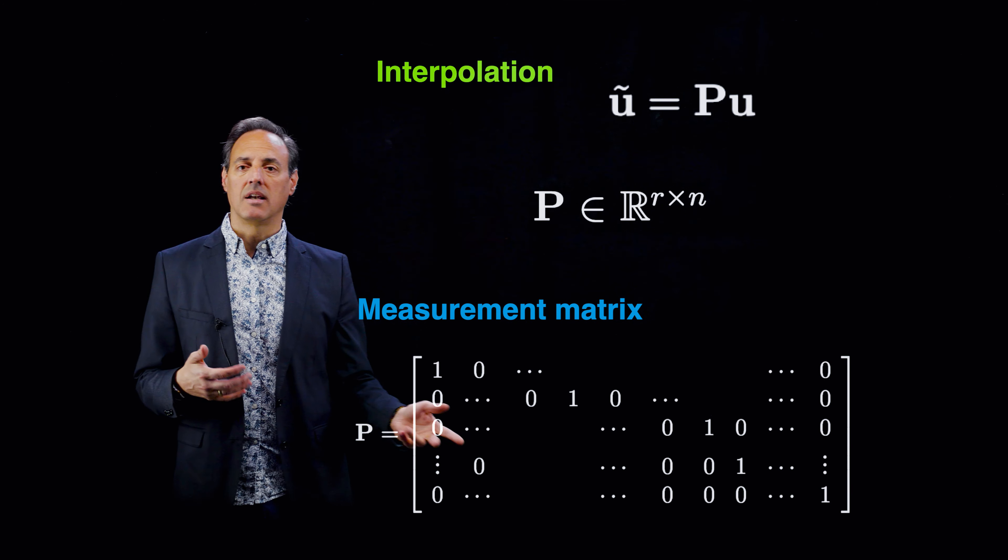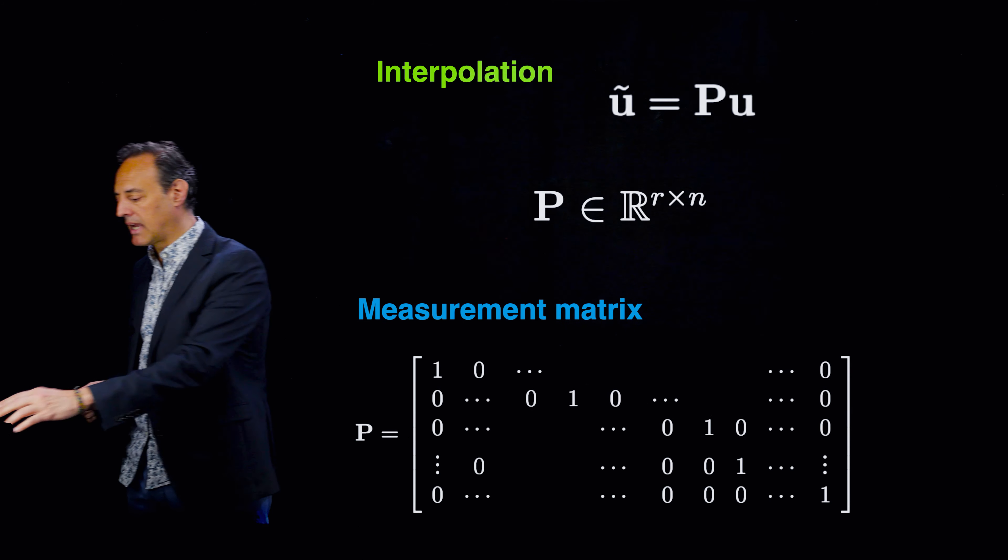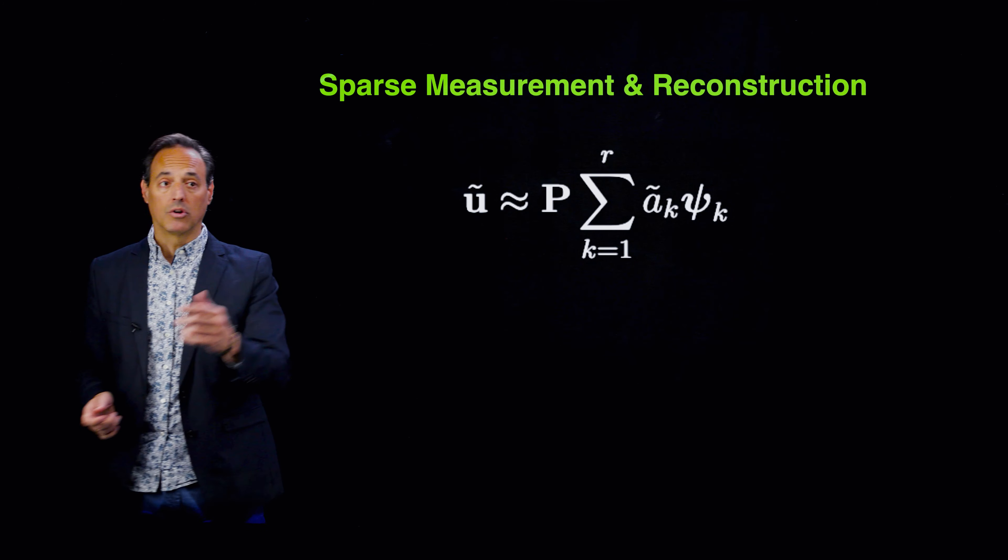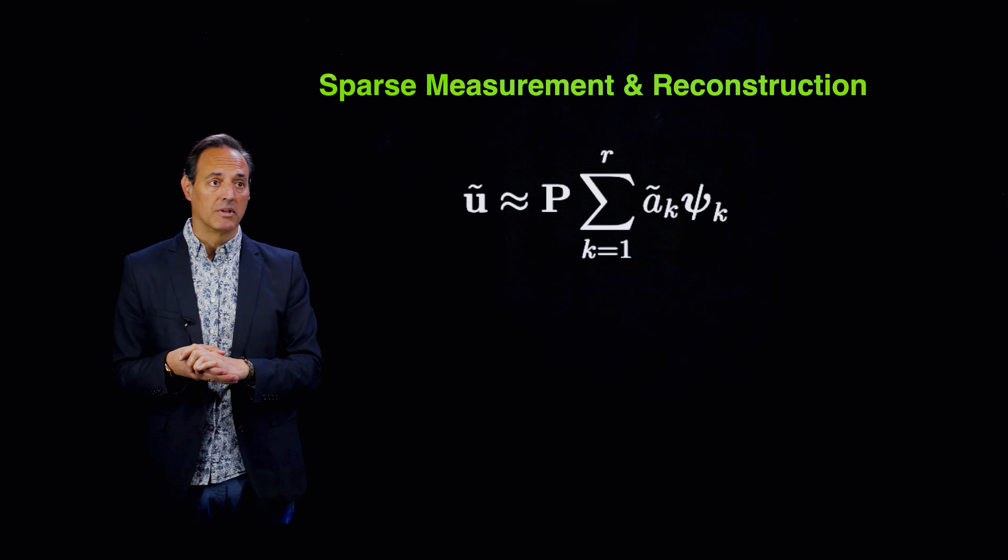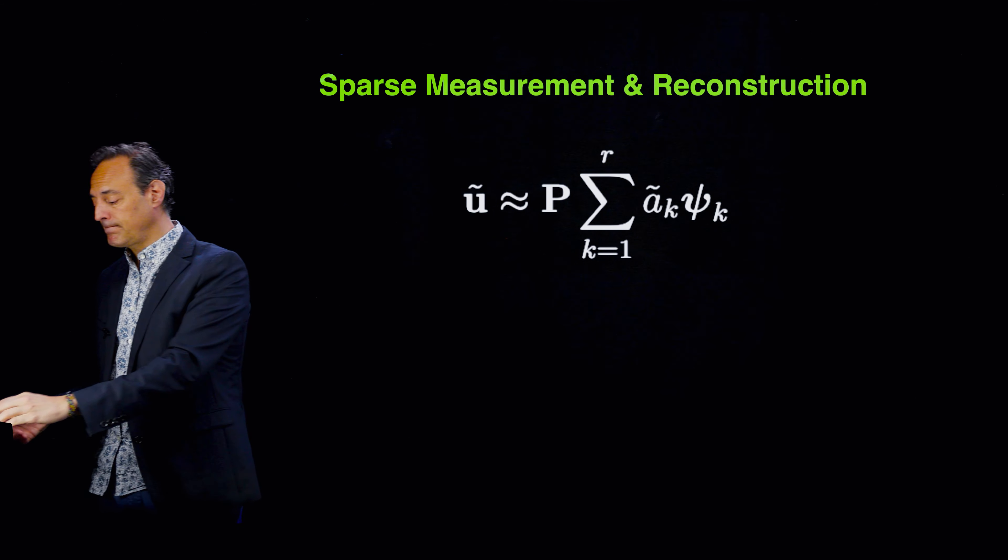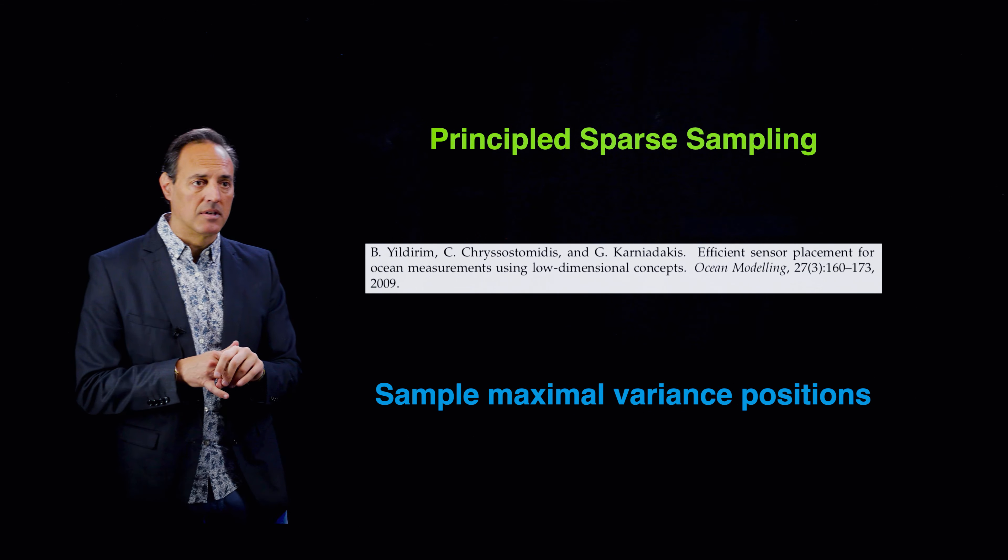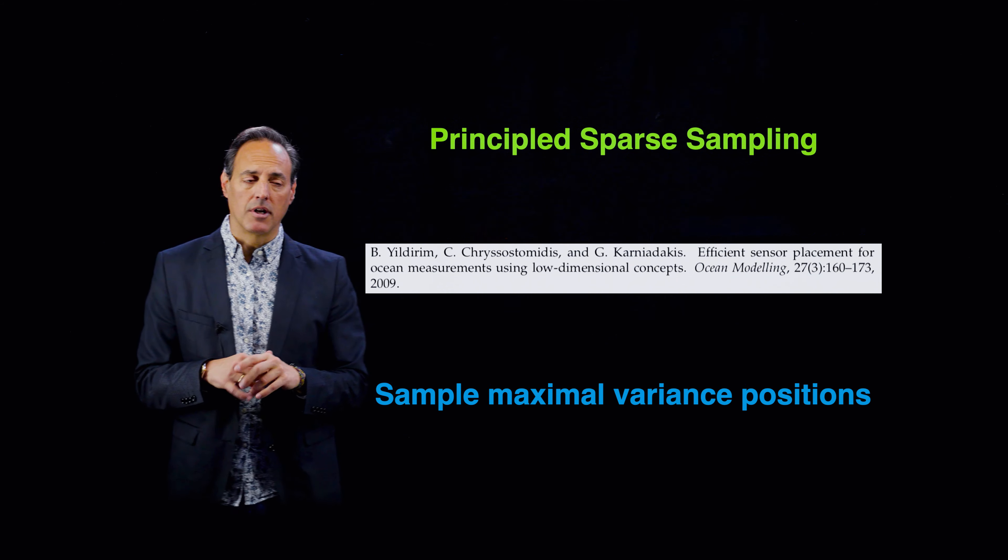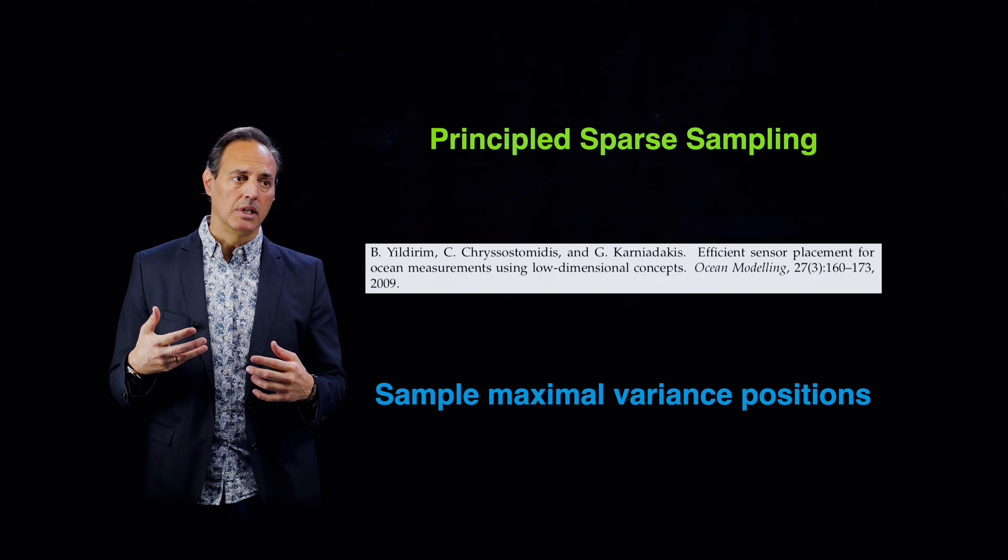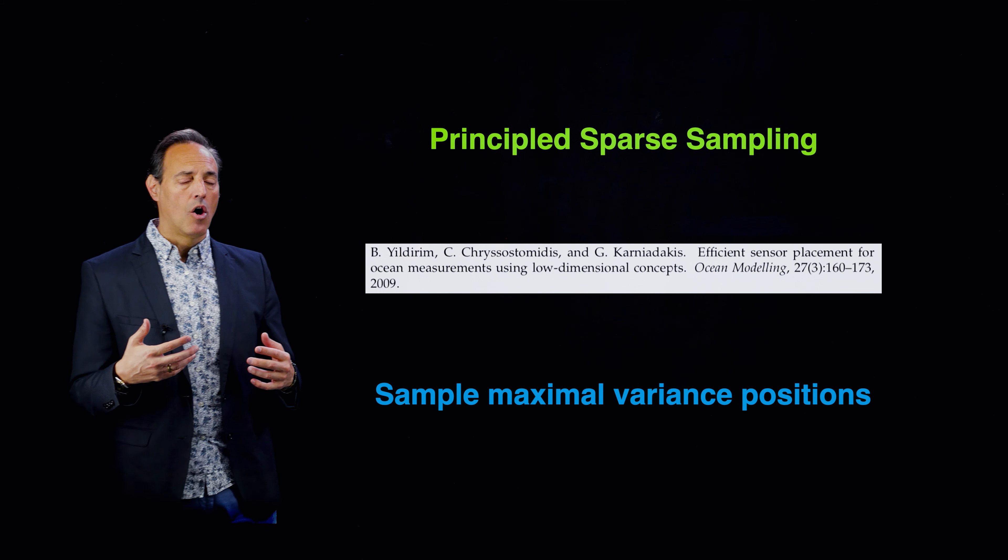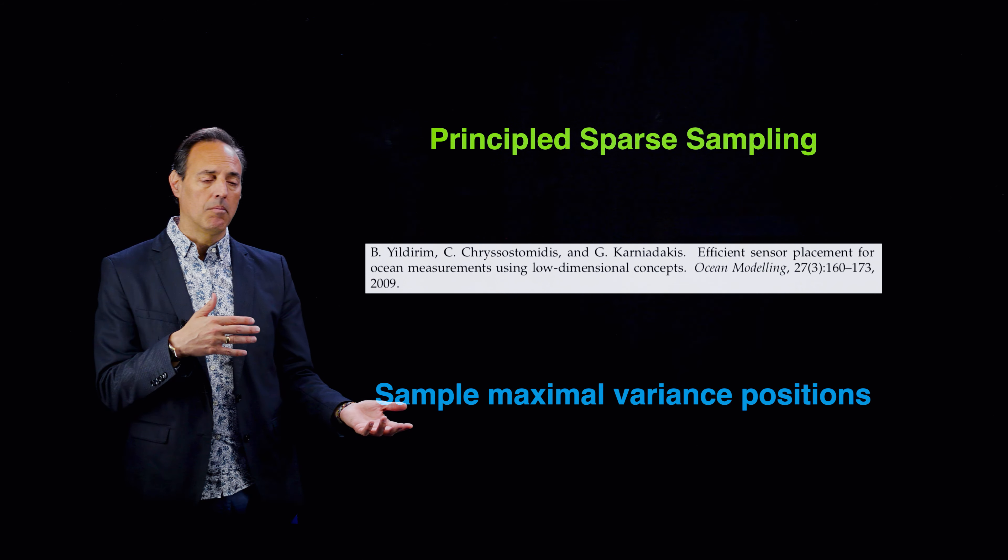We also want to talk about one other architecture because the sparse sampling really comes from the fact that we're going to take the state space projected into its low dimensional representation with a measurement matrix. I've got to figure out how to build this P matrix. That's really what the whole game becomes: how do I construct a P matrix? How do I tell it which rows of the identity I should use to sample my state space?